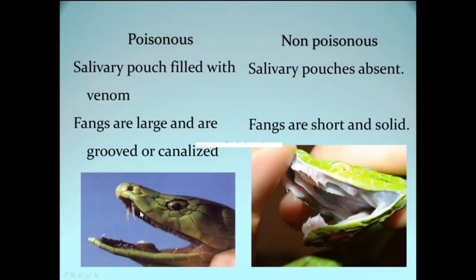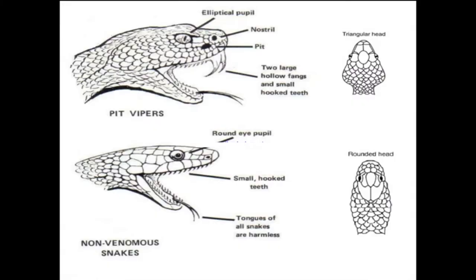Poisonous snakes have a very typical feature: fangs. These are large canalized grooved specialized teeth which can store and inject poison. In non-poisonous snakes there are no fangs — only a row of short solid teeth. The fangs of poisonous snakes are attached to salivary pouches that are visible, whereas non-poisonous snakes have no salivary pouches.